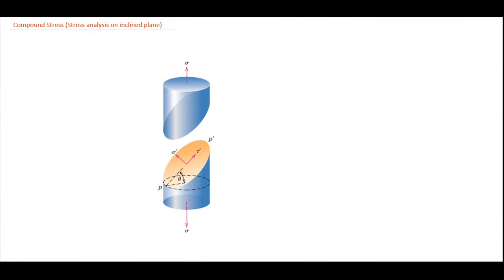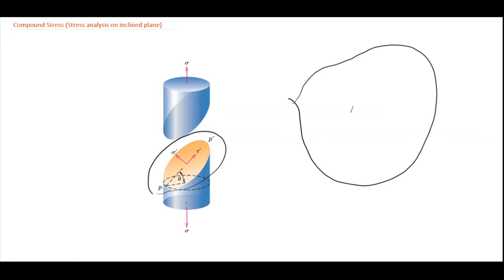In our previous lectures we studied about direct and shear forces and assumed they act independently, analyzing the stresses independently. However, in practical use the loads are applied in different directions and they vary from point to point. Simultaneously the stress developed varies from one point to another, changing its nature from one point to another. We also have to analyze stresses on an area that is inclined with the forces. Hence it is very important to analyze a small element inside the body, which is acted by all types of stresses — direct stresses as well as shear stresses.